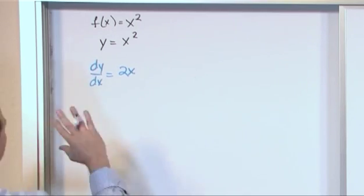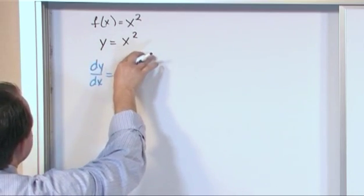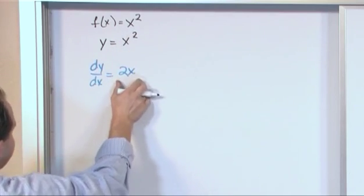But notice what you're doing. I really haven't explicitly told you this, but you're taking the derivative of both sides of this equal sign. On the right hand side is just 2x. That's the rule of differentiation that we've given you.